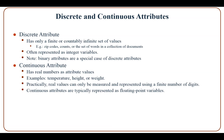Attributes can be discrete or continuous. A discrete attribute has only a finite or countably infinite set of values. Examples are zip codes, counts, or set of words in a collection of documents, and are often represented as integer variables. Nominal attributes are a special case of discrete attributes. A continuous attribute has real numbers as attribute values — examples are temperature, height, or width. Practically, real values can only be measured using a finite number of digits, and continuous attributes are typically represented as floating point variables.